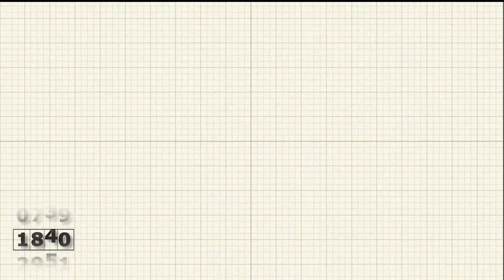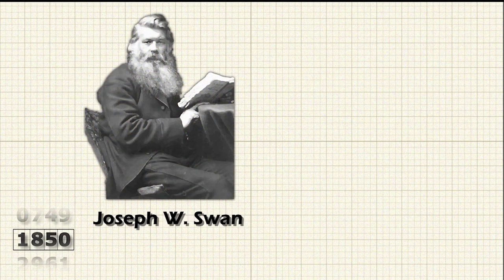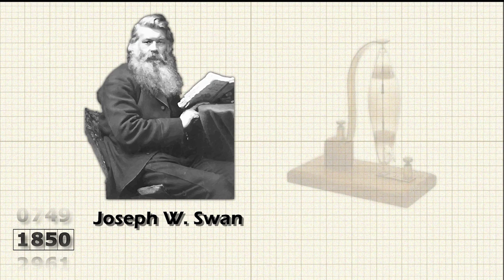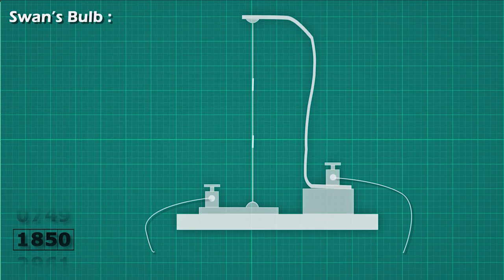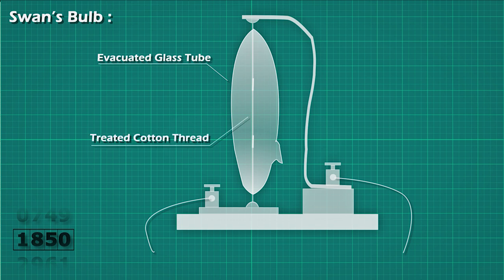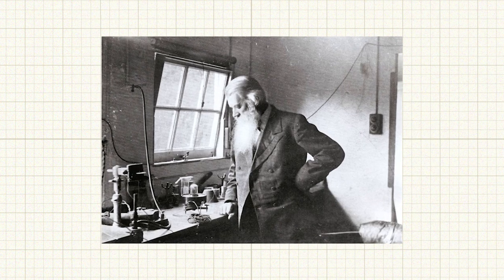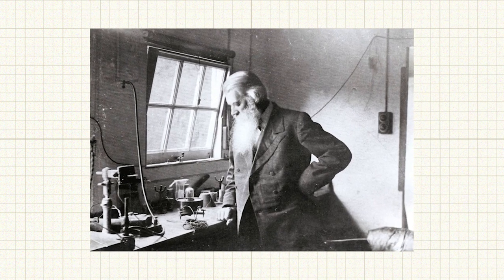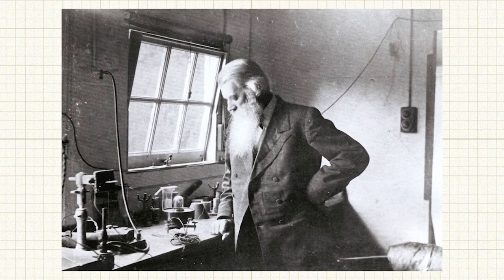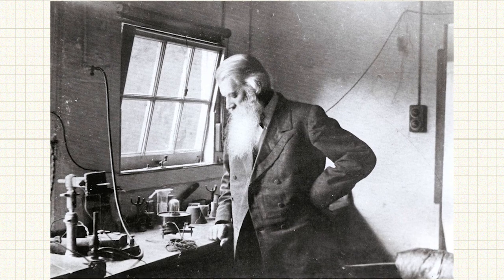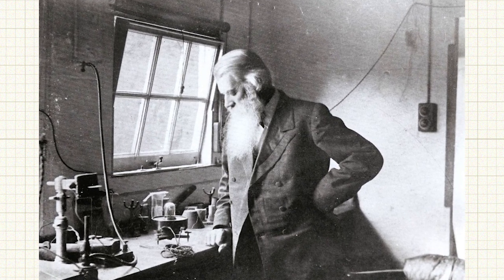In 1850, an English physicist named Joseph Swan began working on a light bulb by enclosing a carbonized paper filament in an evacuated glass bulb. And by 1860, he had a working prototype. Swan's filaments were placed in a vacuum tube to minimize their exposure to oxygen, extending their lifespan. Unfortunately for Swan, the vacuum pumps of his day were not efficient as they are now. The lack of good vacuum and an adequate supply of electricity resulted in a bulb whose lifetime was much too short to be considered an effective producer of light.